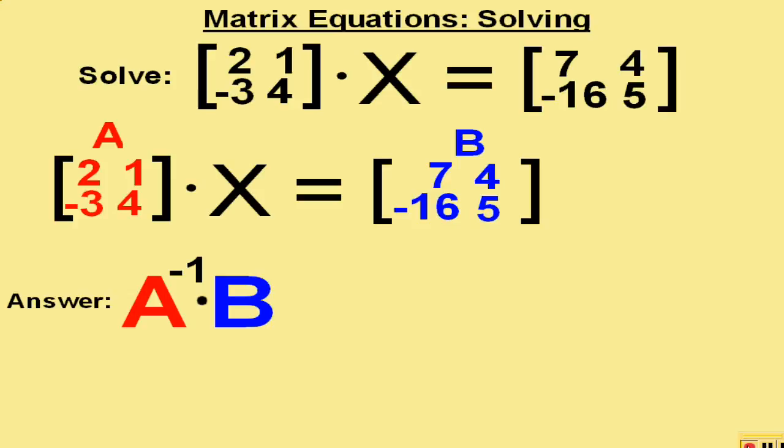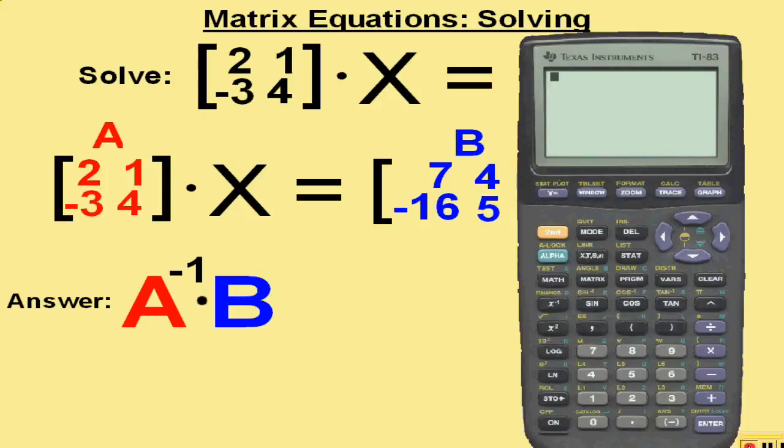We will use the calculator to find it. The first button we push is the matrix button, and we are going to edit the matrices by putting them in. Arrow right to edit and then hit enter. We are going to edit matrix A, and it is a 2 by 2 matrix, so we go 2, enter, 2. And now we will put the numbers in.